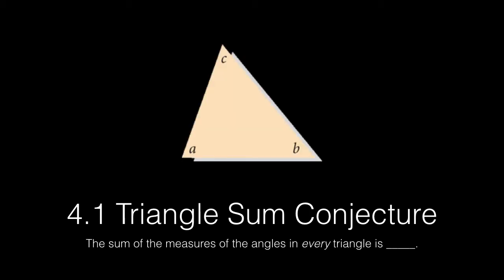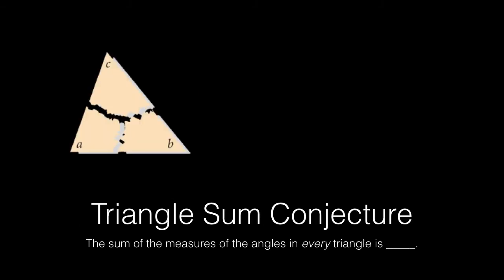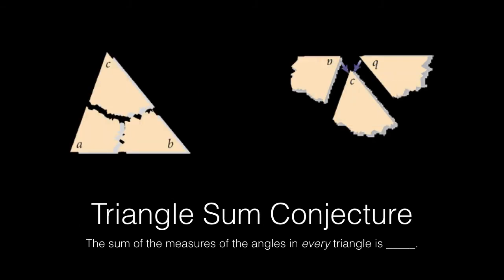If you were to take this triangle and rip it into pieces and rearrange those pieces, you'll see that the angles form not a linear pair because there are three angles, not two, sort of like a linear triplet.